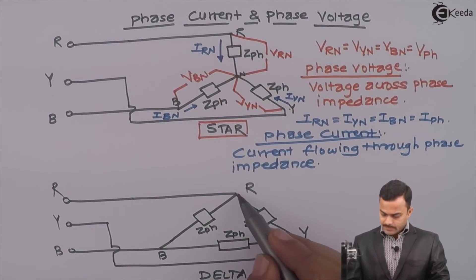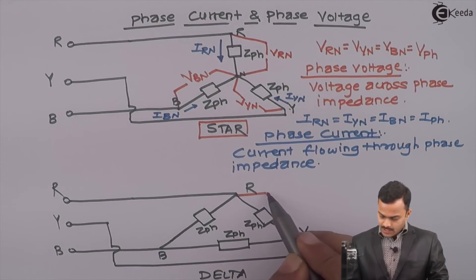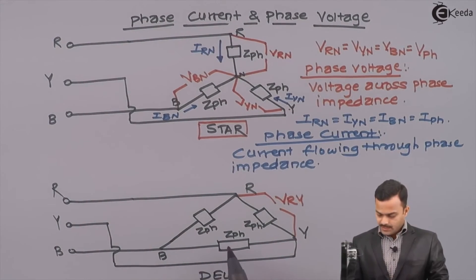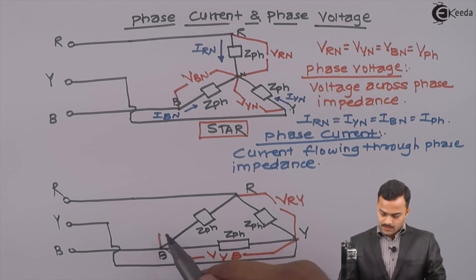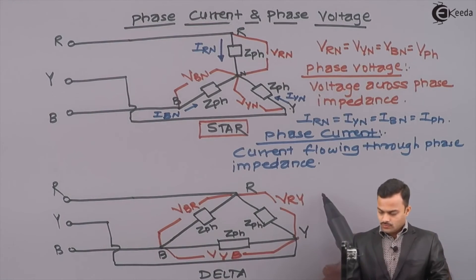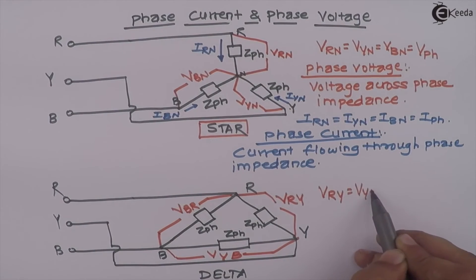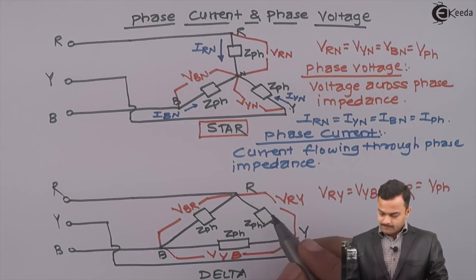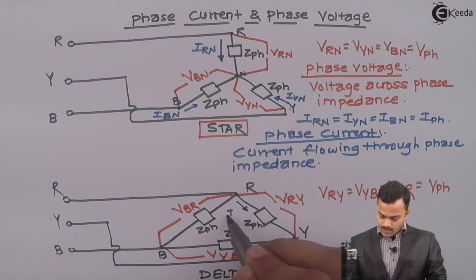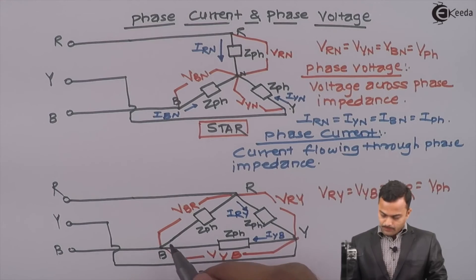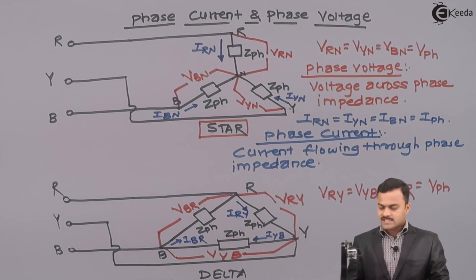In a delta connected load, the impedance is located between R and Y, so the voltage VRY is the phase voltage. Similarly, the impedance between Y and B makes VYB the phase voltage, and VBR is the phase voltage for the third branch. So VRY, VYB, and VBR are the phase voltages. The current carried by each phase impedance — IRY from R to Y, IYB from Y to B, and IBR from B to R — is the phase current.